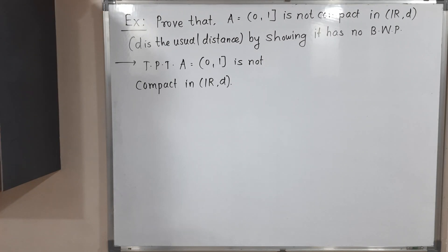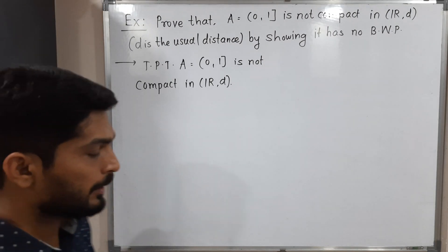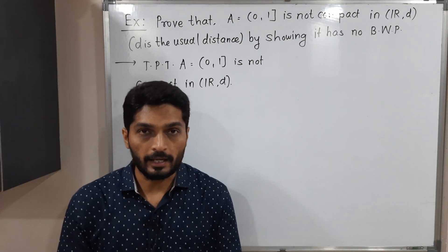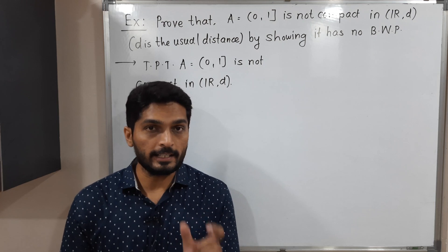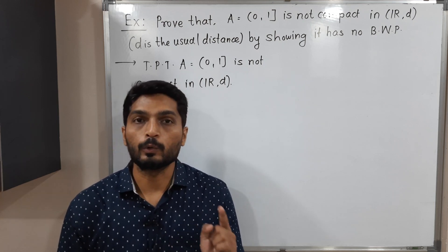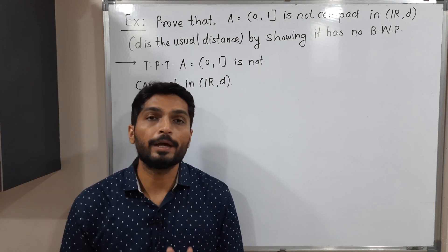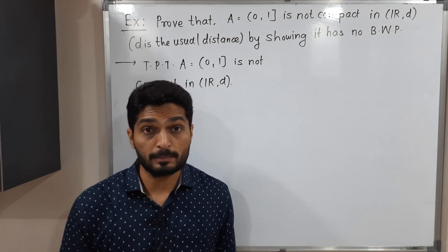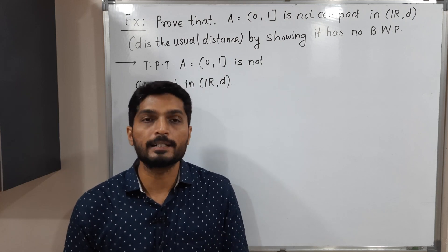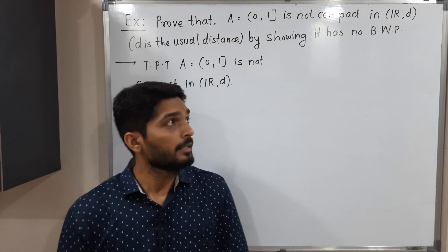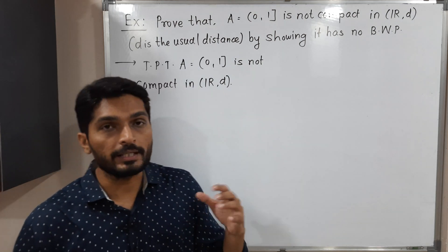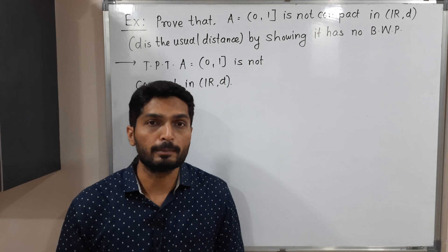Hi everyone. Let us discuss this example. In this example, we have a set A which is an interval open at 0, closed at 1. We have to prove that it is not a compact subset of ℝ^d, where d is the usual distance. At the end, they have mentioned to prove this by showing it has no BWP.